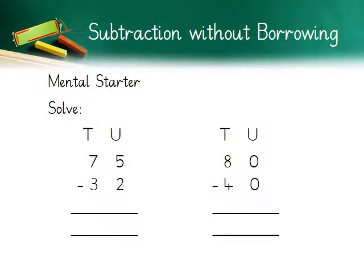Moving on with mental starters — children, you need to solve the given sums with two-digit numbers for subtraction. Take your time, do it very carefully, and later on match your answers. Take care of place value, as the place values are identified at the top of each digit. 75 minus 32 — the answer is 43. Next: 80 minus 40 — the answer is 40.